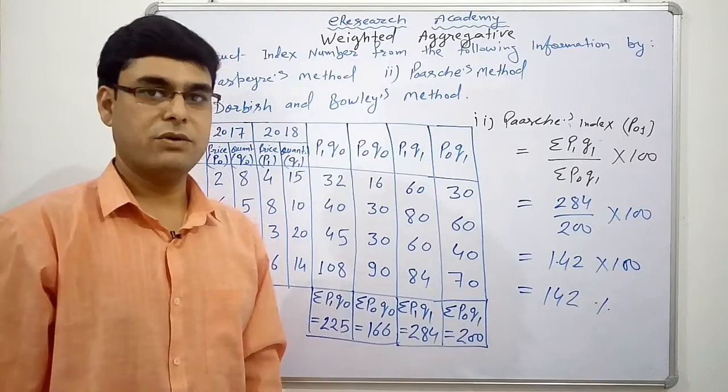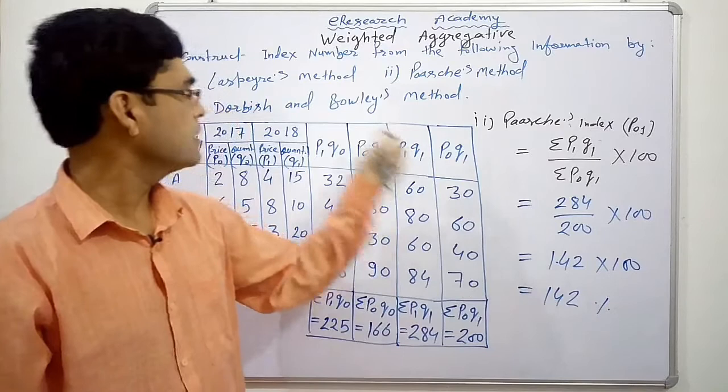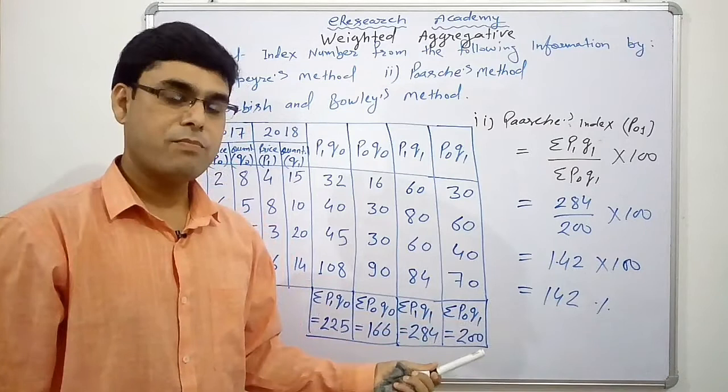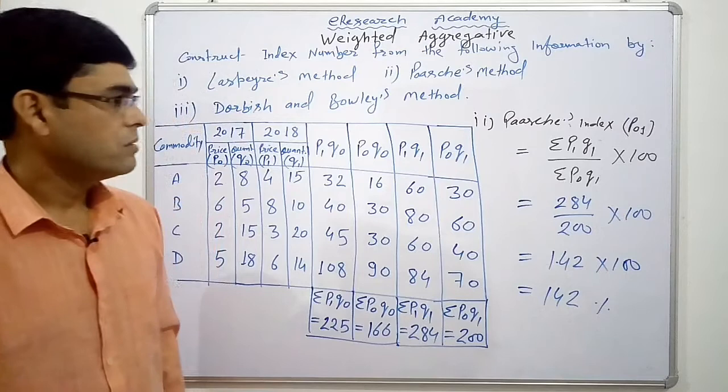So, these are our two answers by Laspier's and passage method. Passage index is a bit higher than the Laspier one. Under Laspier, our increment was 35.54% whereas, here, the increment in the basket of these four commodity or index of these four commodity is 42%.